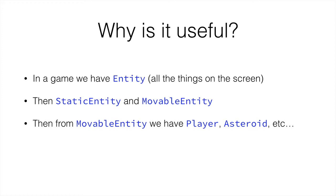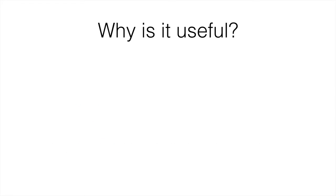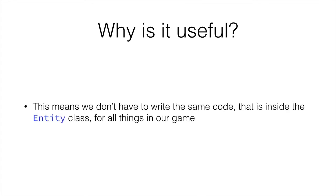Obviously, the player and the asteroid are not the same thing — what changes, for example, is their image. And from static entity we could have, for example, a space station that doesn't move. This helps us save time because we don't have to write the same code twice — that code sits inside entity for all the things in our game. All the code inside entity would be in all the classes below it, and all the code in movable entity would be in all the classes below it, but not those above it. So the classes at the bottom end up inheriting a lot of behaviour and properties from all the classes at the top.